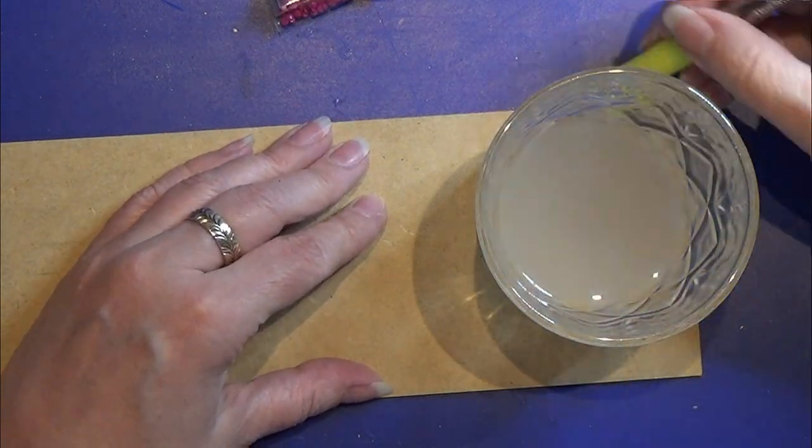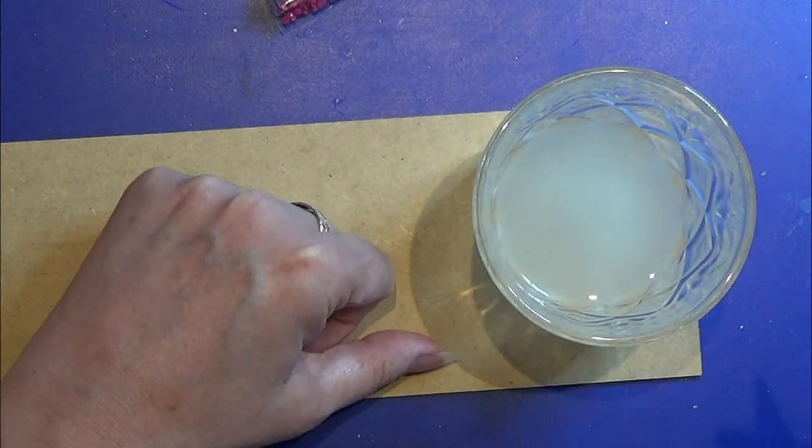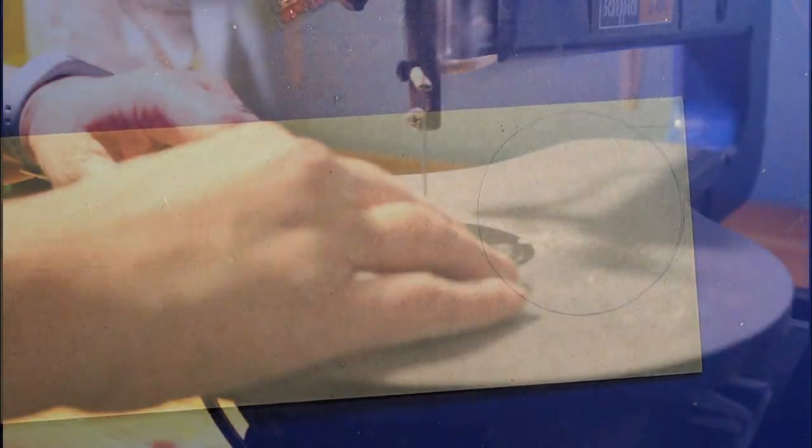Using my glass to draw a circle on the board that I'm going to cut out, and I'm using my scroll saw to cut out the tabletop.